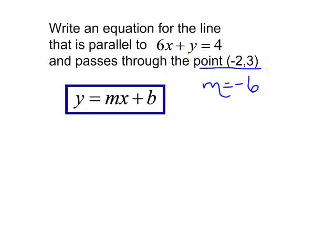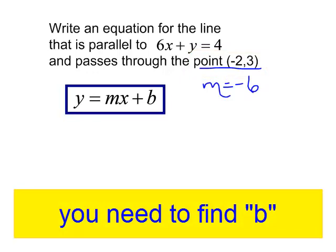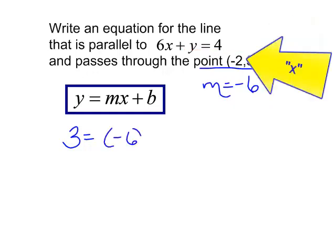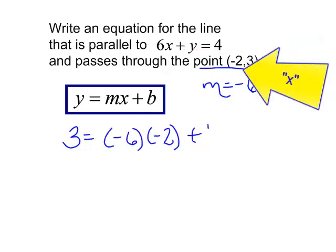The problem is I don't have b, so I will plug in the x and the y from my point. y is 3. The slope is negative 6 times x, x is negative 2, plus b.